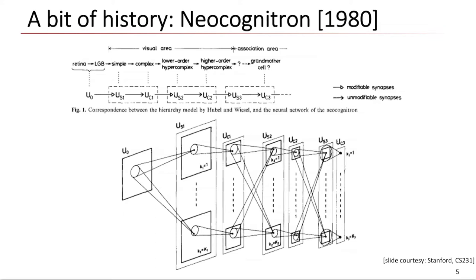The convolutional neural network didn't start recently. In the 1980s, there was the Neocognitron, which used a similar technique: focusing on local parts to extract information from the signal, then aggregating data using a hierarchical multi-layer neural module. This is a similar idea to the convolutional neural network.